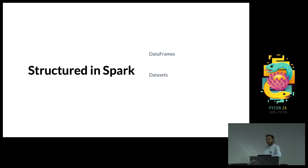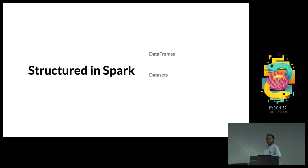Structured options in Spark are DataFrame and Dataset. One difference between RDD and DataFrame is that RDD has 4 partitions by default, while DataFrame has 200 partitions by default. This matters because to gain extreme parallelism on the cluster, you need to increase the number of partitions.